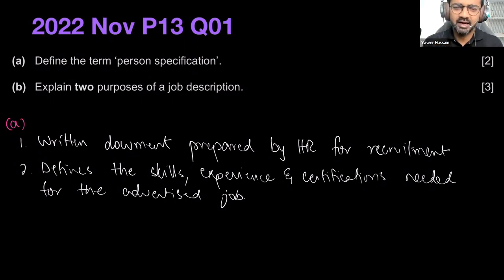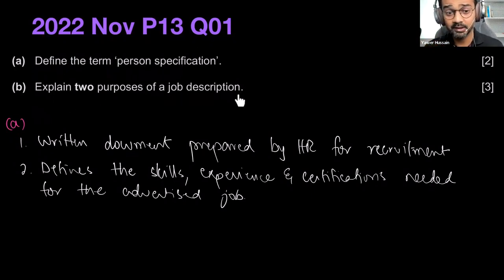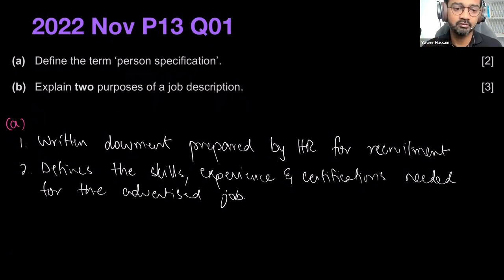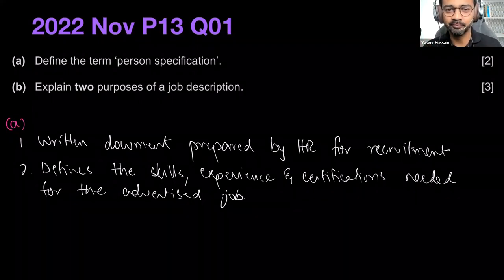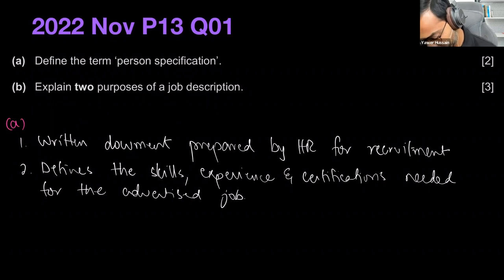I've often seen students make a mistake when I'm checking their papers. They read the first one — person specification — and then very quickly read job description as person specification, thinking they've been asked two purposes of person specification without carefully reading the question. Don't do that. Pause for a minute, look at the question properly — they have asked about job description, not person specification.